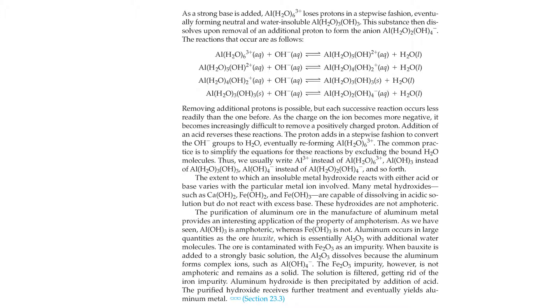As a strong base is added, the aluminum loses protons in a stepwise fashion, eventually forming neutral and water-soluble Al(OH)3. This solution then dissolves upon removal and addition of protons. Removing additional protons is possible, but each successive reaction occurs less readily than the one before. As the charge on the ion becomes more negative, it becomes increasingly difficult to remove a positively charged proton. Addition of an acid reverses these reactions. The protons add in a stepwise fashion to convert the hydroxide groups to water, eventually reforming the hydrated aluminum.